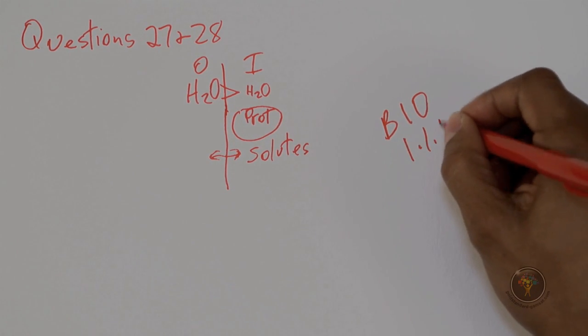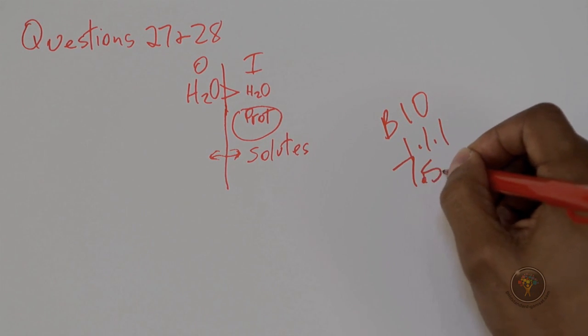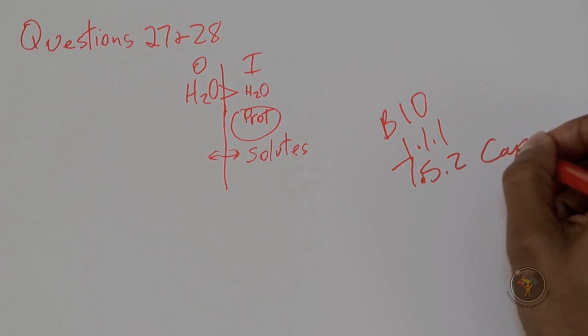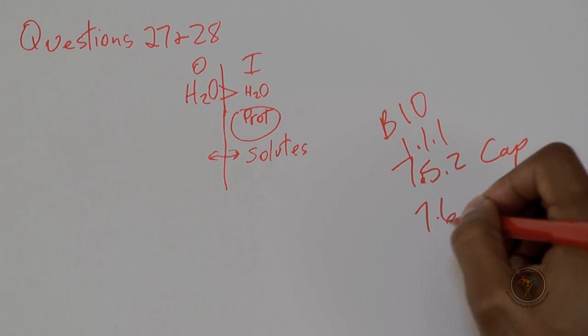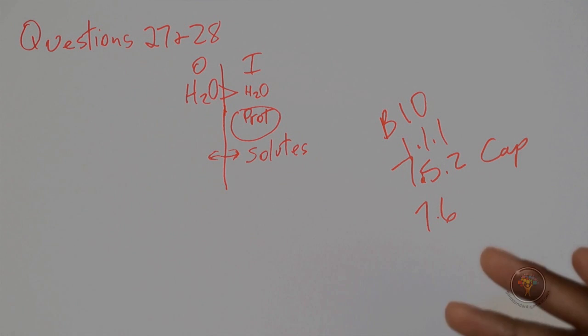So anyway, if you are looking to read up about diffusion or osmosis, here are some places: 7.5.2 is for capillaries and 7.6 is for the lymphatic system, because the lymphatic system is the system that is most concerned with that third space in the body.